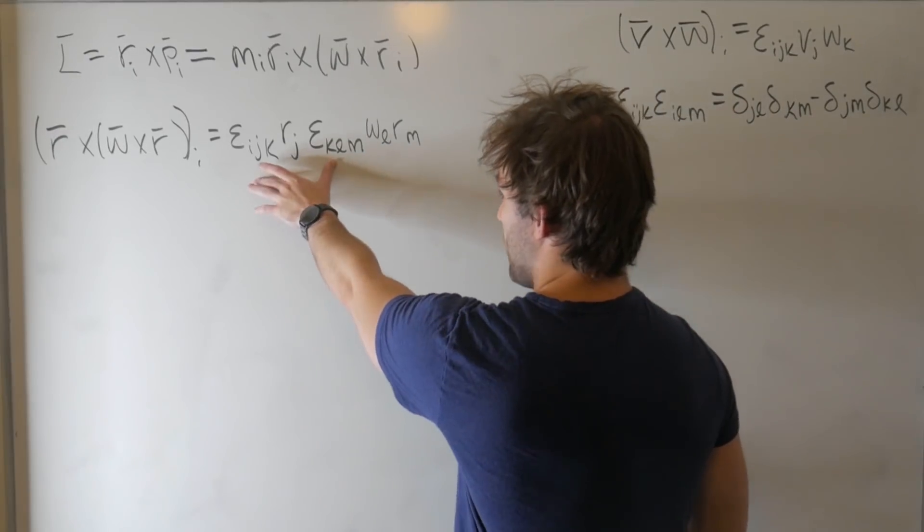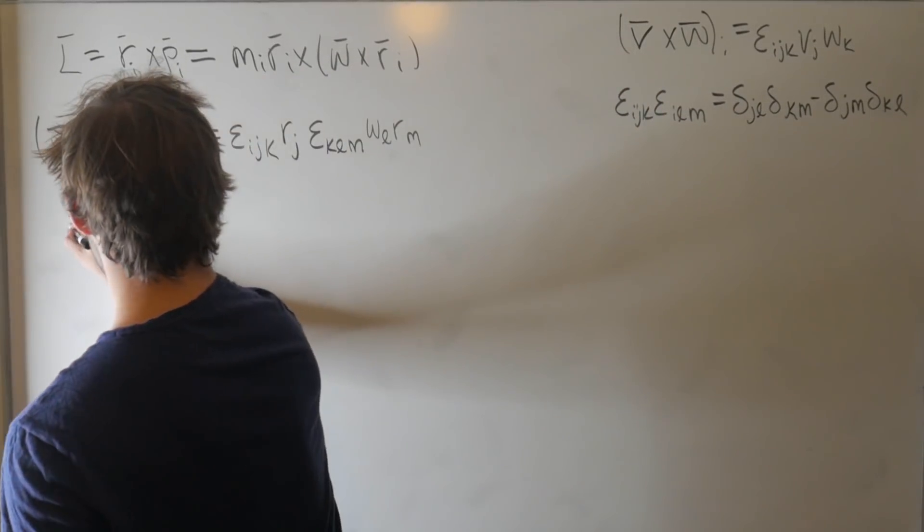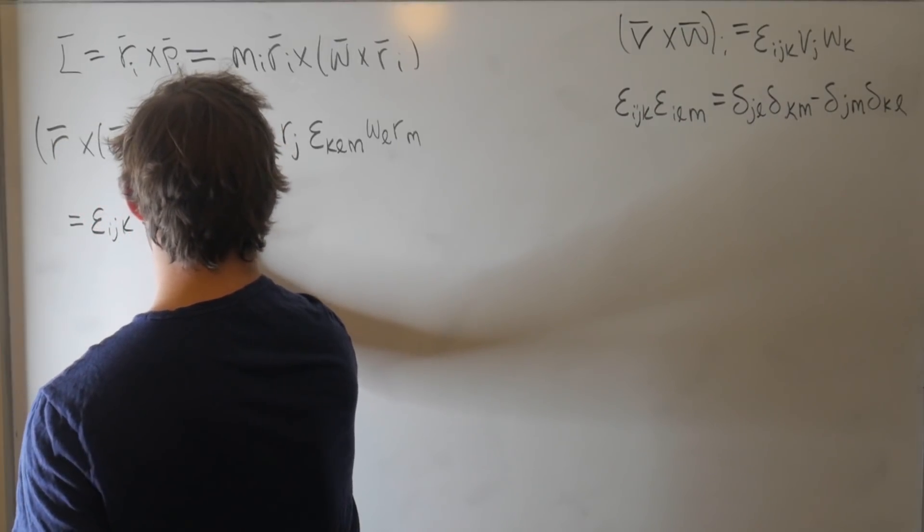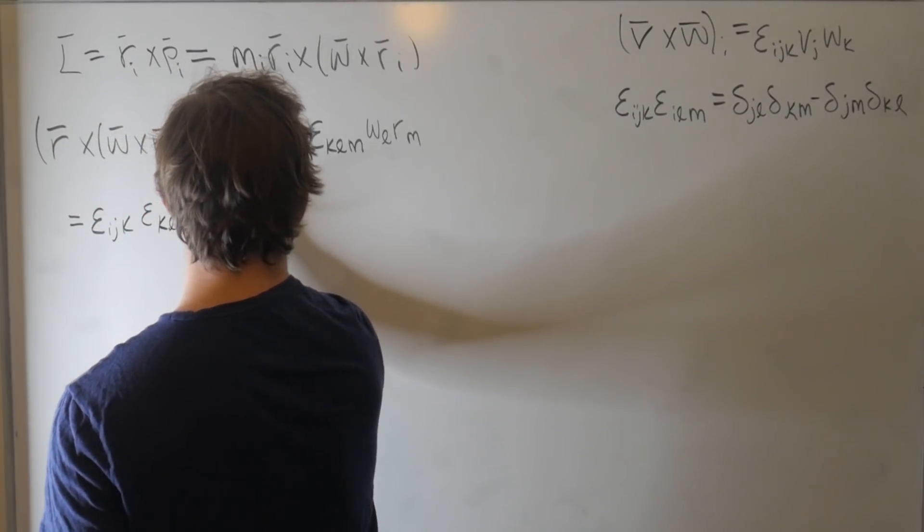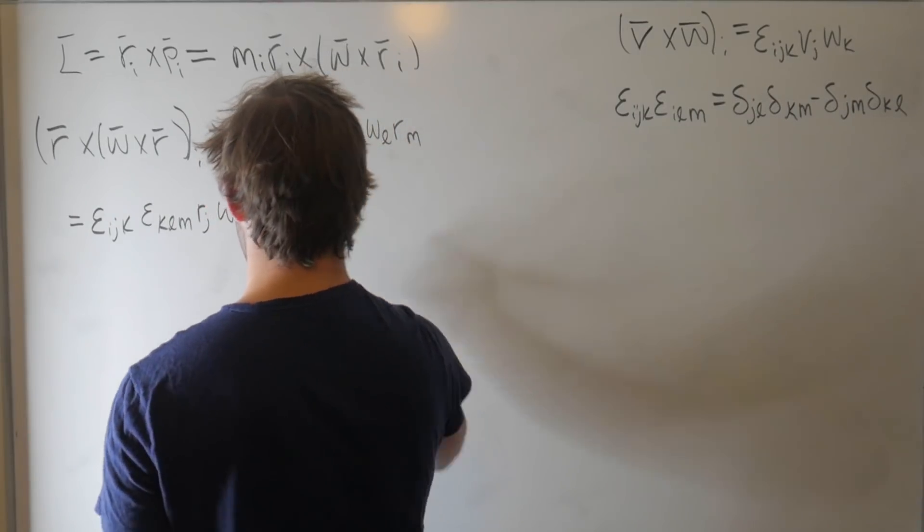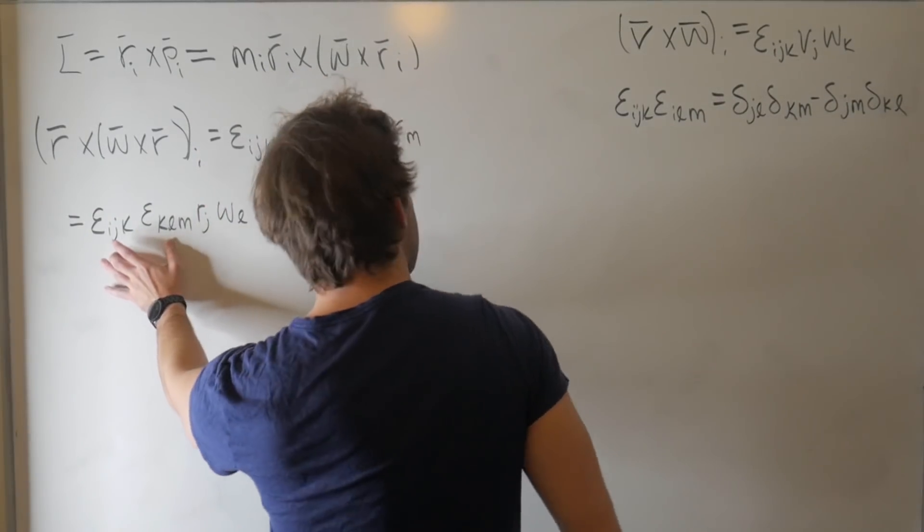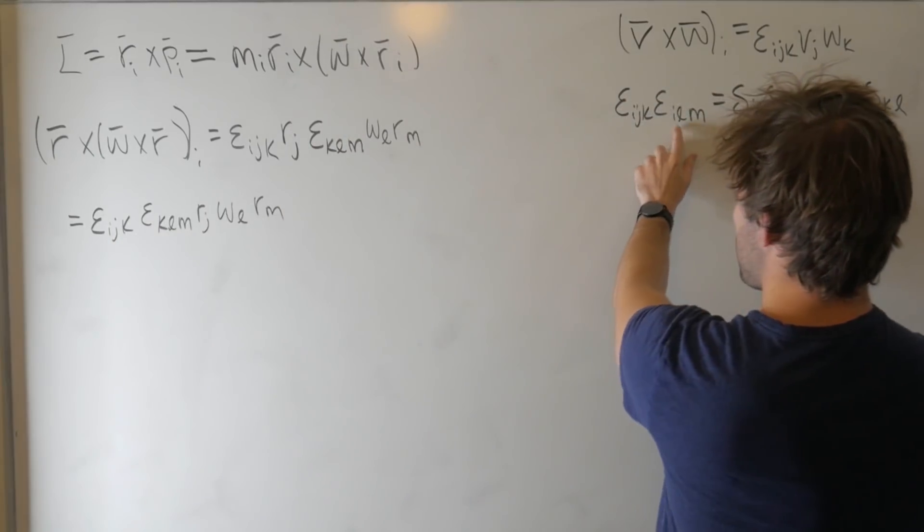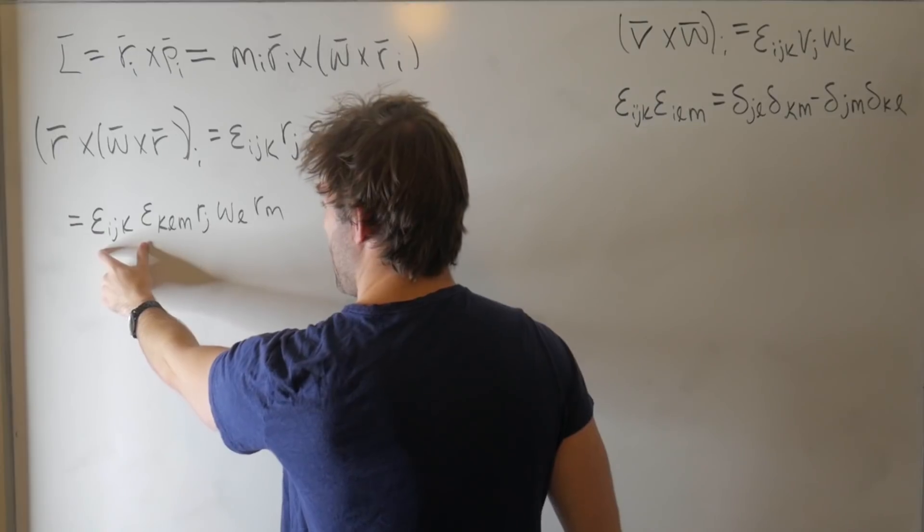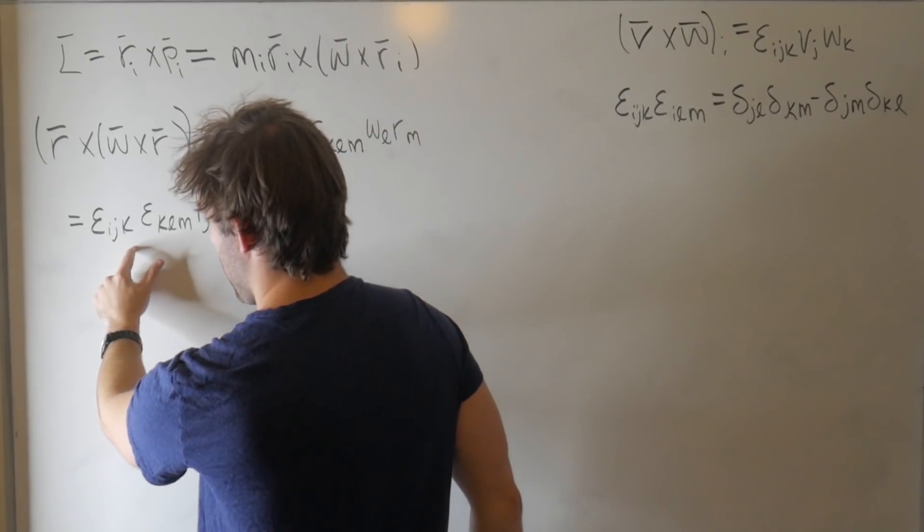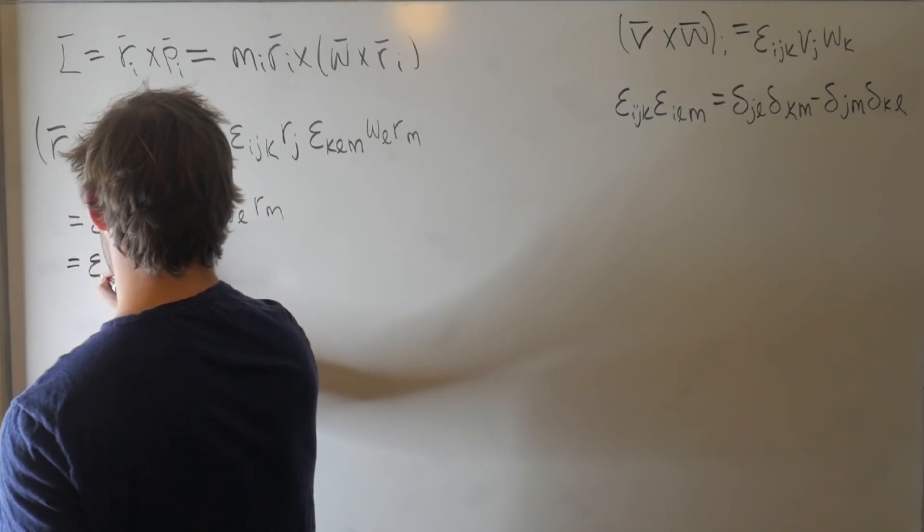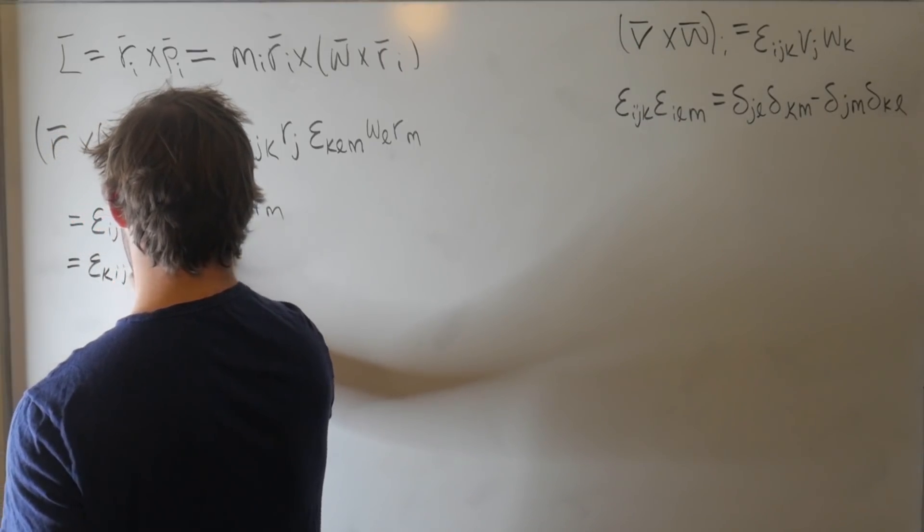And now we have a product of two Levi-Civita symbols. So this is just epsilon_ijk epsilon_klm r_j omega_l r_m. These indices don't match up quite. We need to permute one of these such that the first index is matched. So we can turn this i, j, k into a k, i, j, epsilon_kij epsilon_klm r_j omega_l r_m.